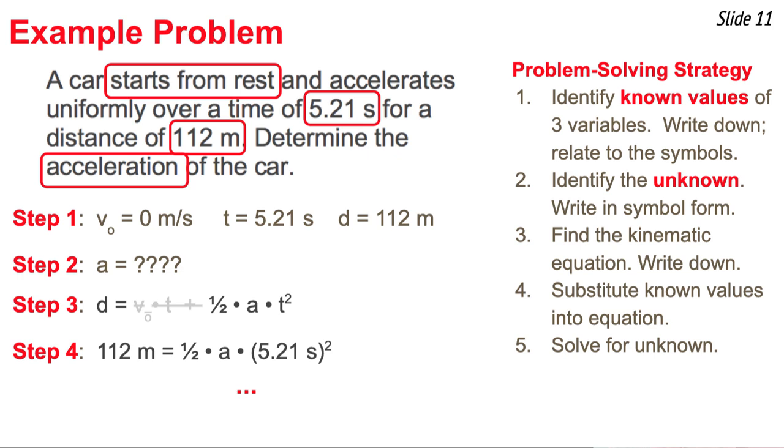Now I'm going to do some algebra and calculations to solve for this unknown value, a, the acceleration. I'm just going to make sure I follow all the rules of algebra. And when I do, I end up getting the acceleration to be 8.25 meters per second squared. And that's how you use this five-step strategy to solve a kinematic equation problem.